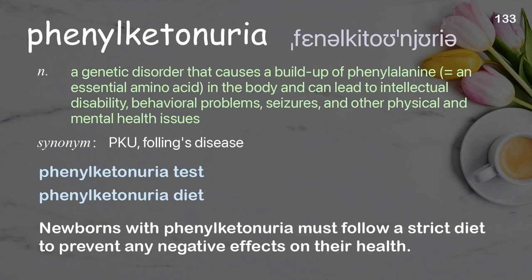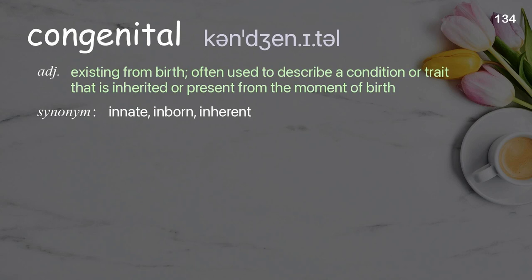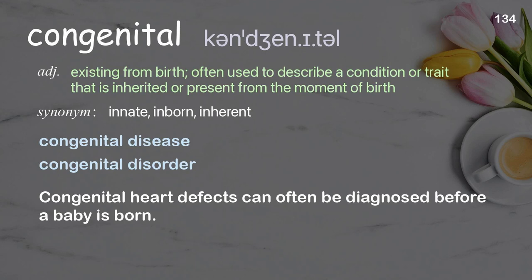Congenital: existing from birth, often used to describe a condition or trait that is inherited or present from the moment of birth. Examples: congenital disease, congenital disorder. Congenital heart defects can often be diagnosed before a baby is born.